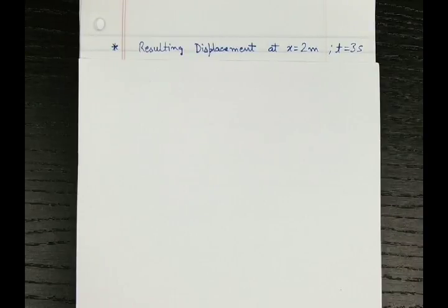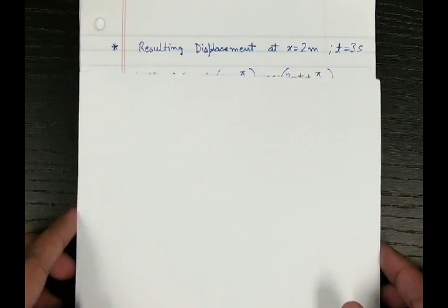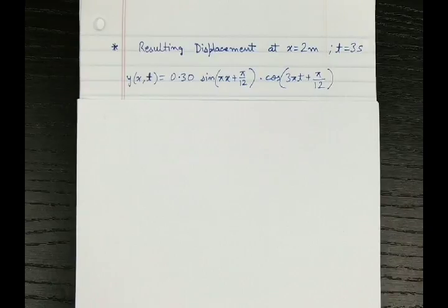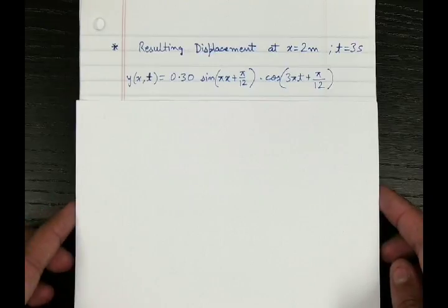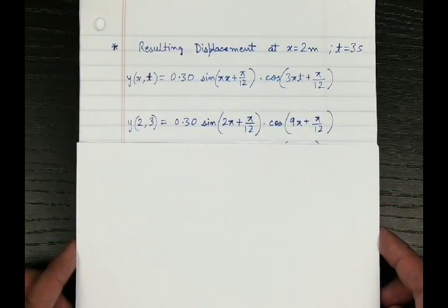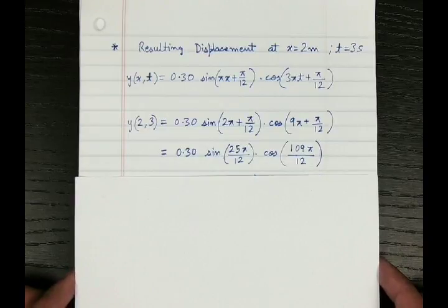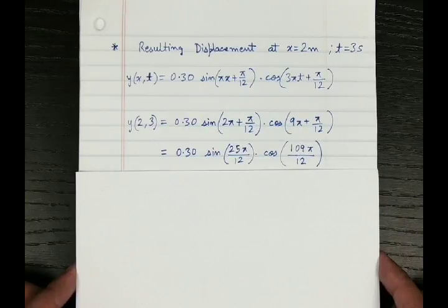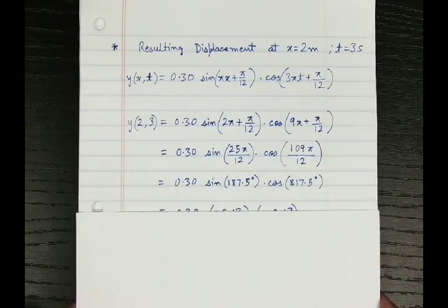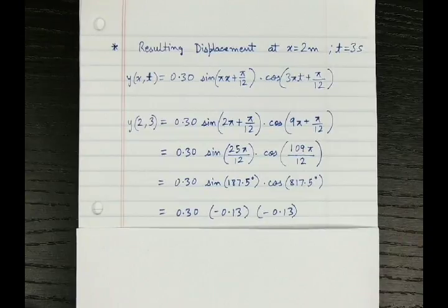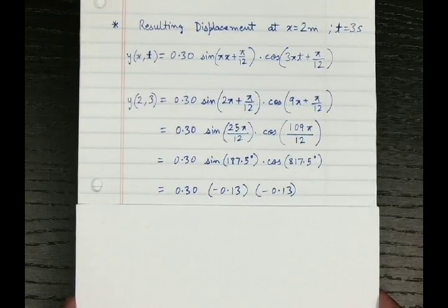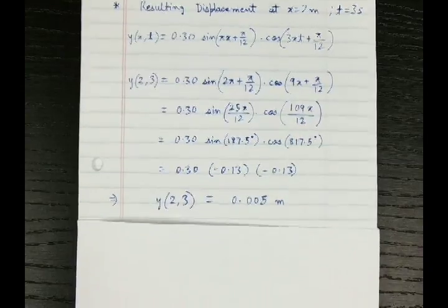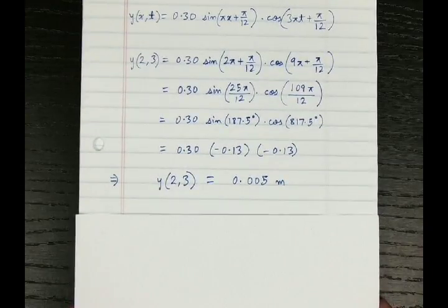Let's say x is given as 2 meters and time is given as 3 seconds. Substituting x = 2 and t = 3 into the resultant wave equation, we get 0.3 sin(25pi/12) · cos(109pi/12). Writing pi as 90 degrees, this becomes 0.3 sin(187.5°) · cos(817.5°). Evaluating using a calculator, the final value of y at x = 2 m and t = 3 s is 0.005 meters.